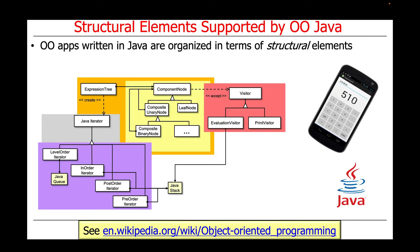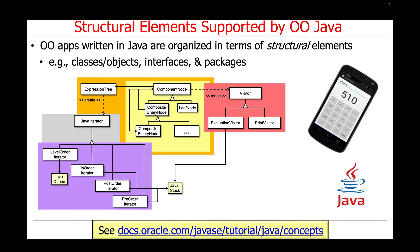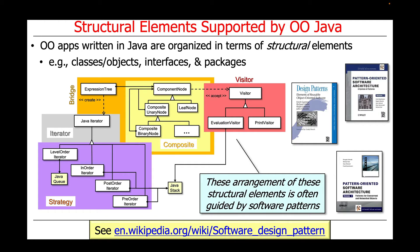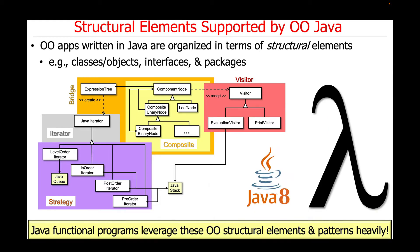Object-Oriented apps written in Java are organized in terms of certain structural elements, such as classes, objects, interfaces, and packages. Oftentimes, the arrangement of these structural elements is guided by software patterns. Java functional programs leverage these object-oriented structural elements and patterns very heavily. In fact, it's next to impossible to write any Java program without using classes.